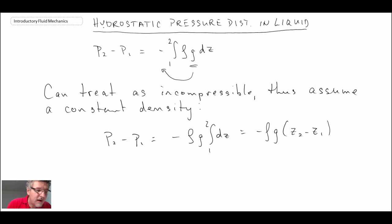So that becomes the equation. We can rearrange that: z1 minus z2 equals p2 over rho g minus p1 over rho g.